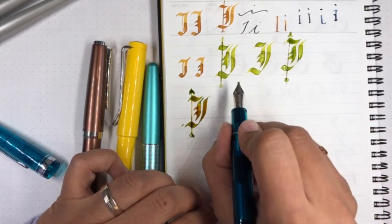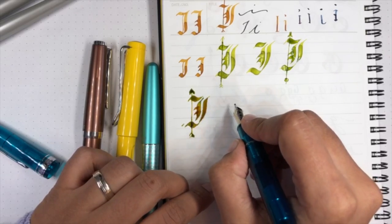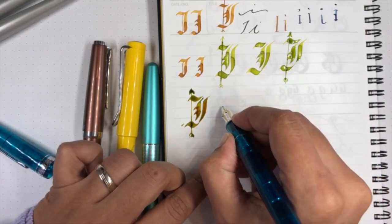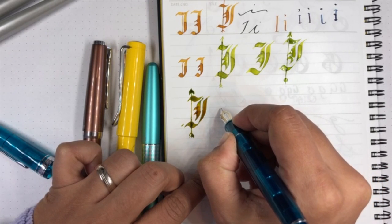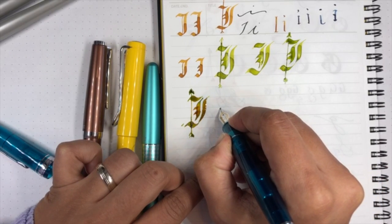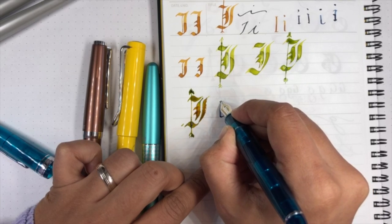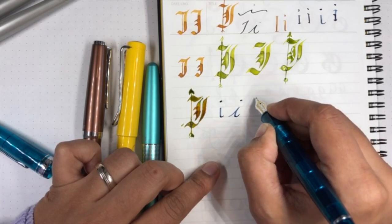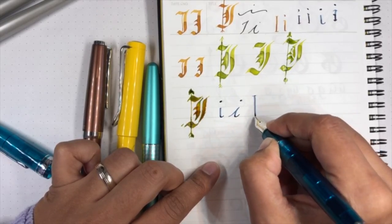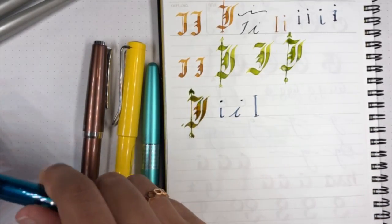Next up we have the Sailor music stub nib. This one's really nice because it's really usable for anyone, like if you're not really into calligraphy or you just want to do some writing. It's pretty comfortable for just about anyone. Here's just a normal I, just a cursive I, just a capital I, easy peasy, just throwing those in there for fun.